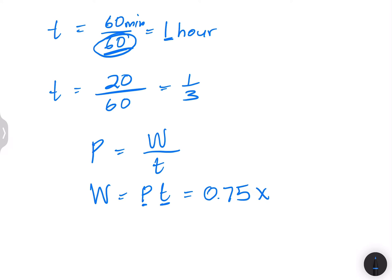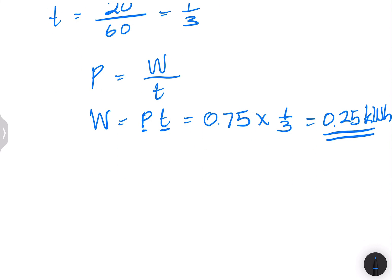In this case, that would be we said one over three. And in this case, that will give us 0.25 kilowatt hours. So it means this is the amount of energy that is dissipated in 20 minutes in terms of kilowatt hours.